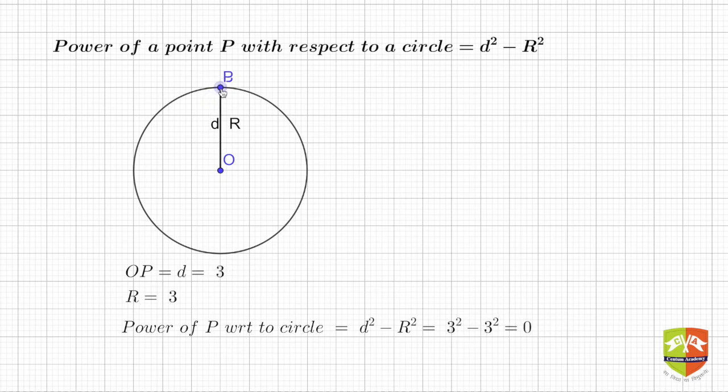The moment it sits on B, so it's now on the circumference, the value of the power is clearly 0.